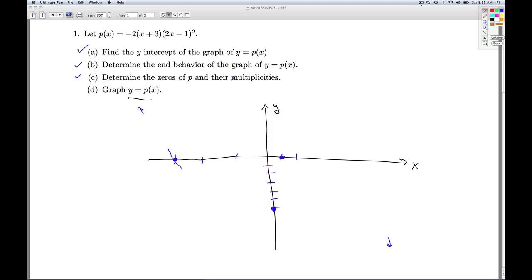So putting this all together, I'm going to come down, cross through at the negative 3, cross through at the y intercept, head up, touch at the X intercept, and then head on down.